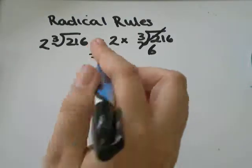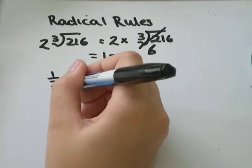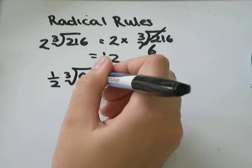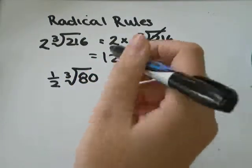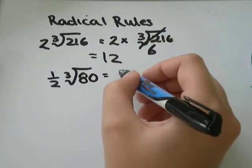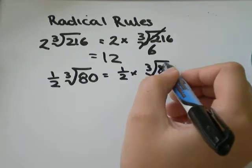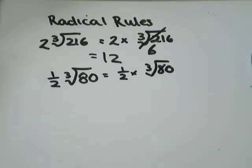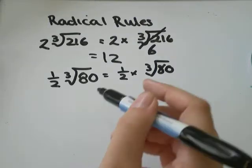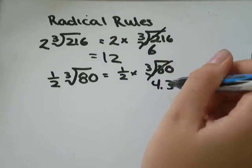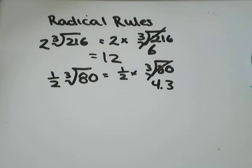I've got one more example: one half times the cubed root of 80. I'll go 80 to the exponent of, in brackets, 1 divided by 3 on my calculator, and I get about 4.3. Times one half, I get approximately 2.15.